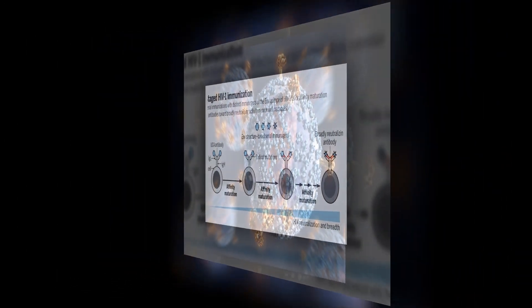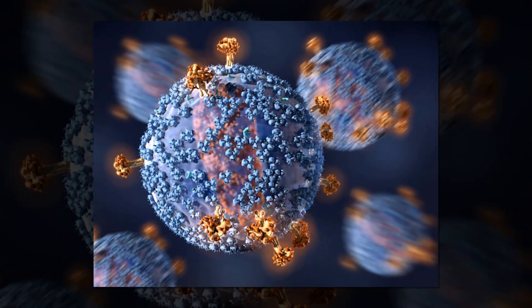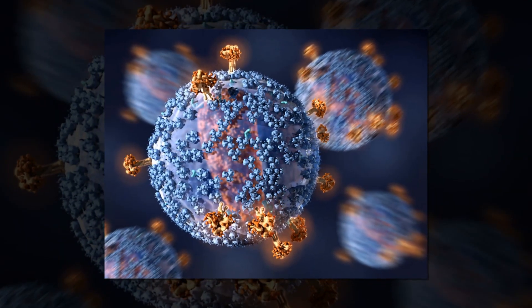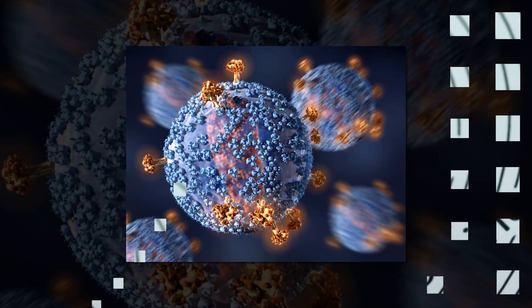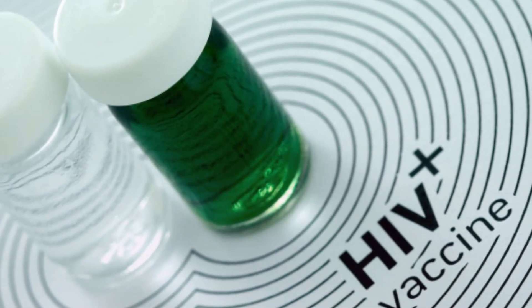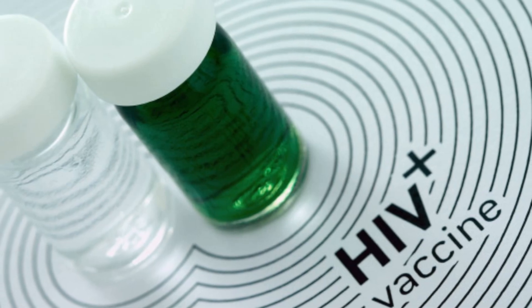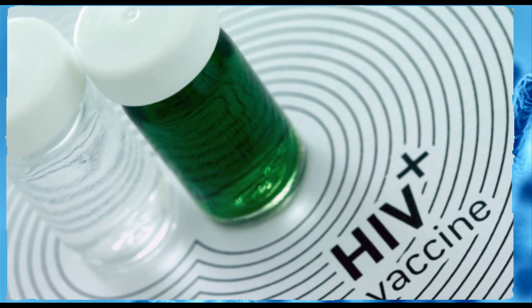Currently, it is assumed that an HIV-1 vaccine can only be effective if it produces these antibodies in vaccinated humans. The findings improve understanding of the dynamics of such antibodies and are an important building block for further research into an HIV-1 vaccine.